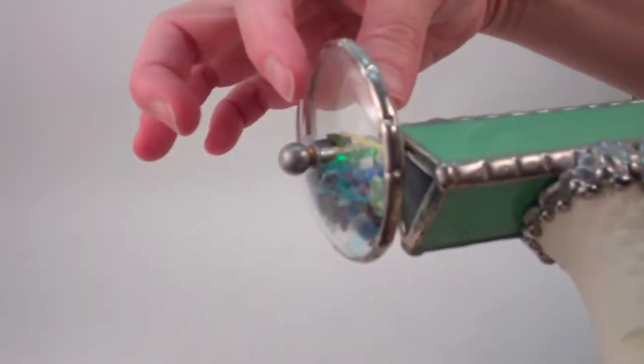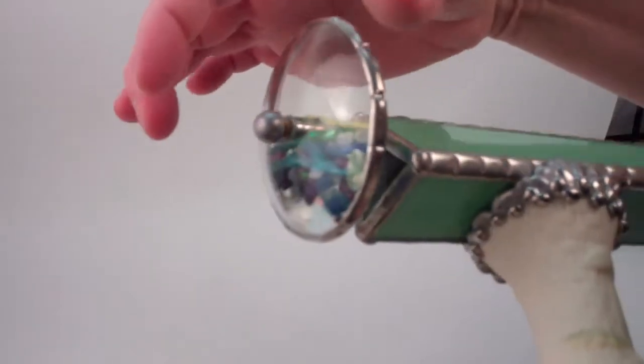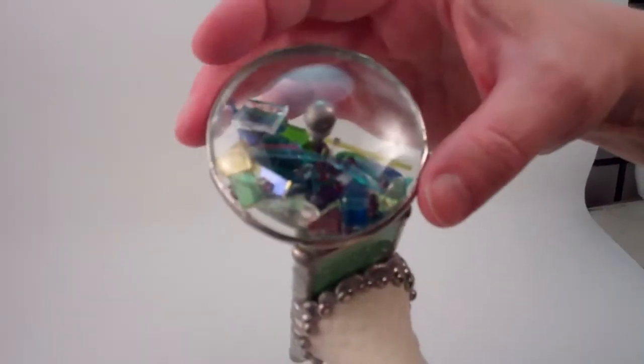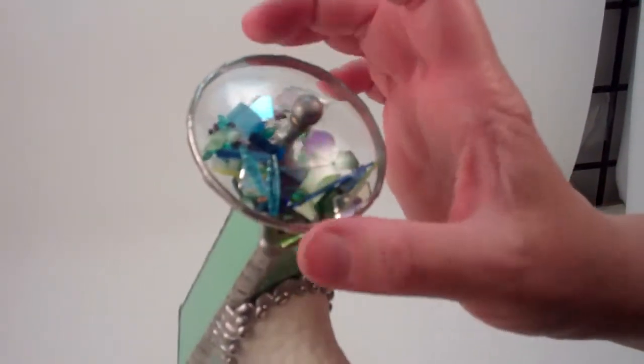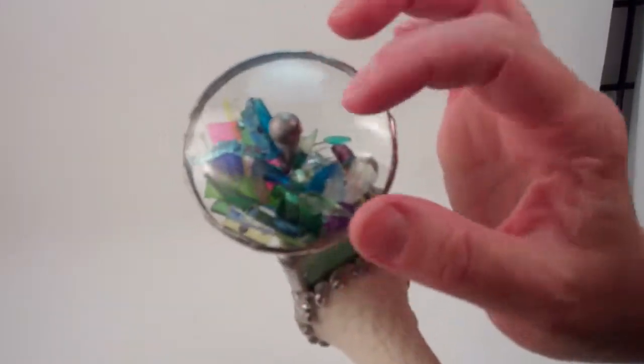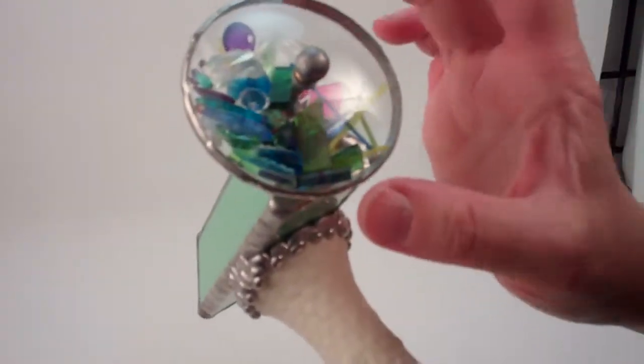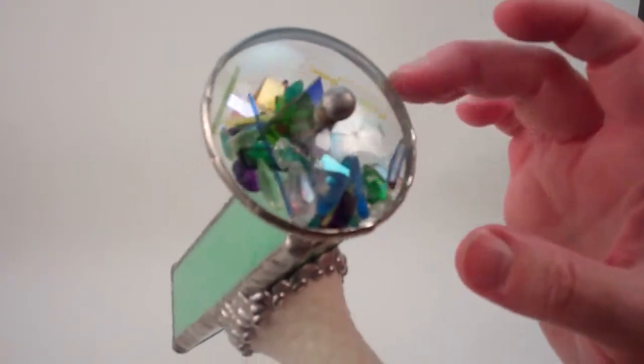It is a convex glass on both sides of the object chamber and inside are pieces of front surface mirror, dichromic glass, Murano cane beads, beautiful pieces that tumble and flow inside.